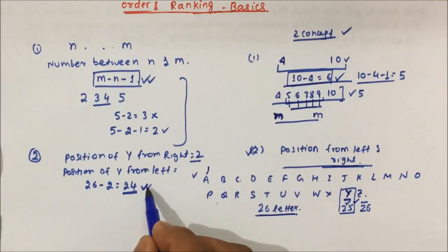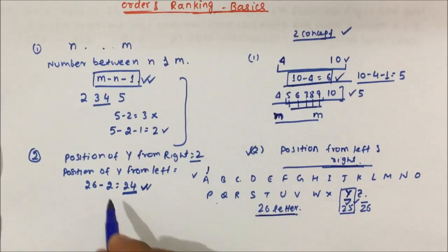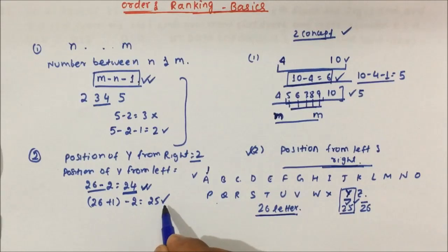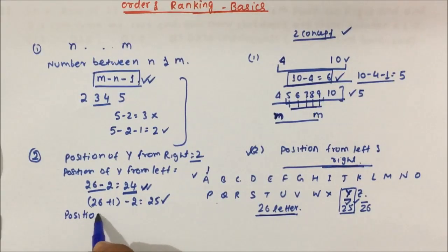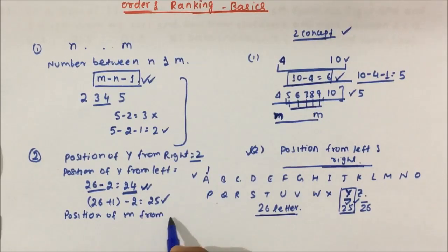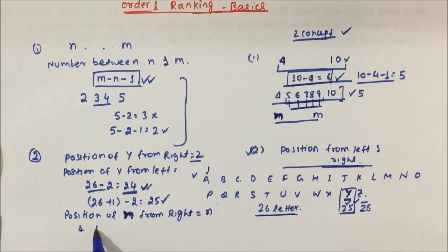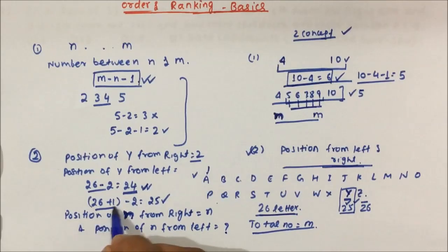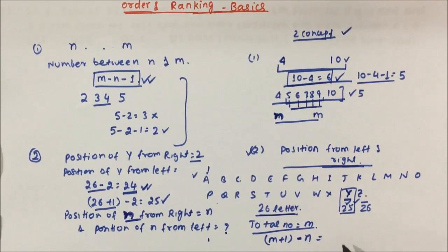So how will you calculate the position of Y from the left side? The position of Y from left side will be 26 plus 1 minus 2, which equals 25 — and then only it will be correct. So if position of M from right is equal to N, and position from left you have to calculate, with total number M: the formula will be M plus 1 minus N, and this will be the position from left.